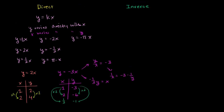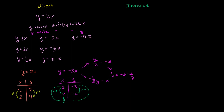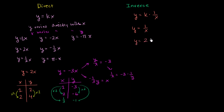Now let's explore inverse variation. The general form — using the same variables — is y = k·(1/x), some constant times 1/x, instead of a constant times x. Examples include: y = 1/x, y = 2·(1/x) which is the same as 2/x, y = 1/3·(1/x) which is the same as 1/(3x), and y = -2/x.